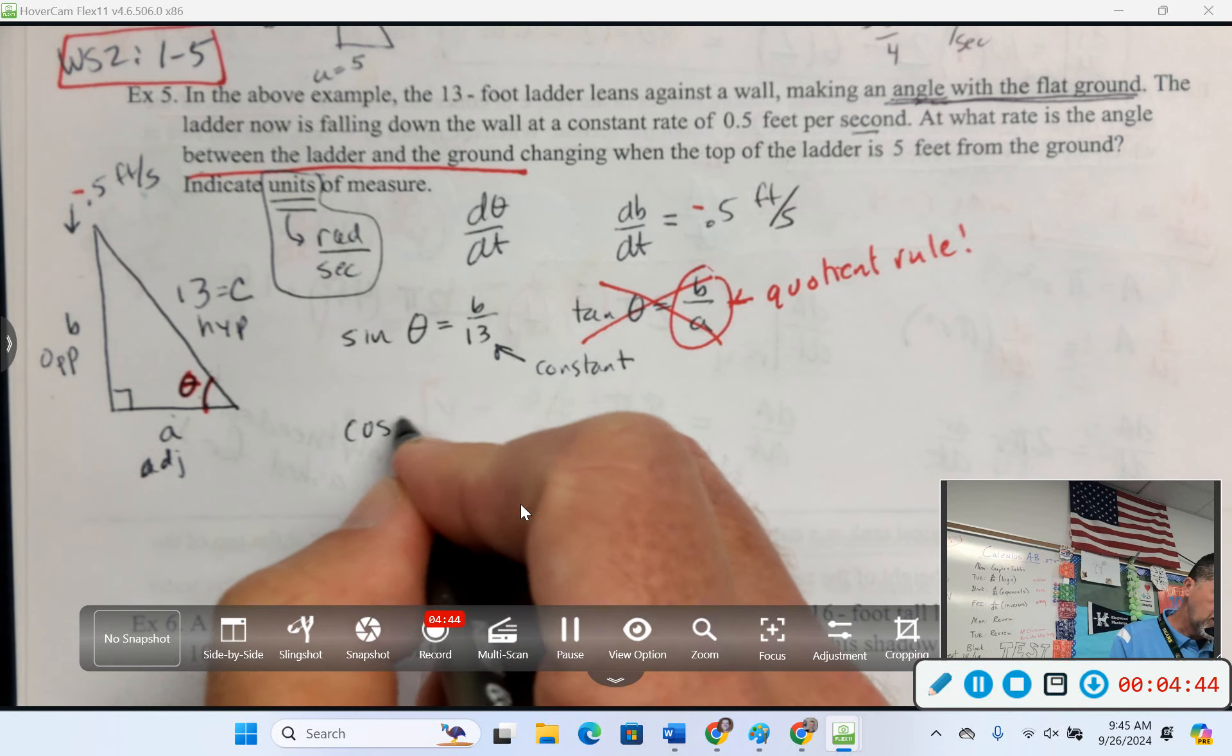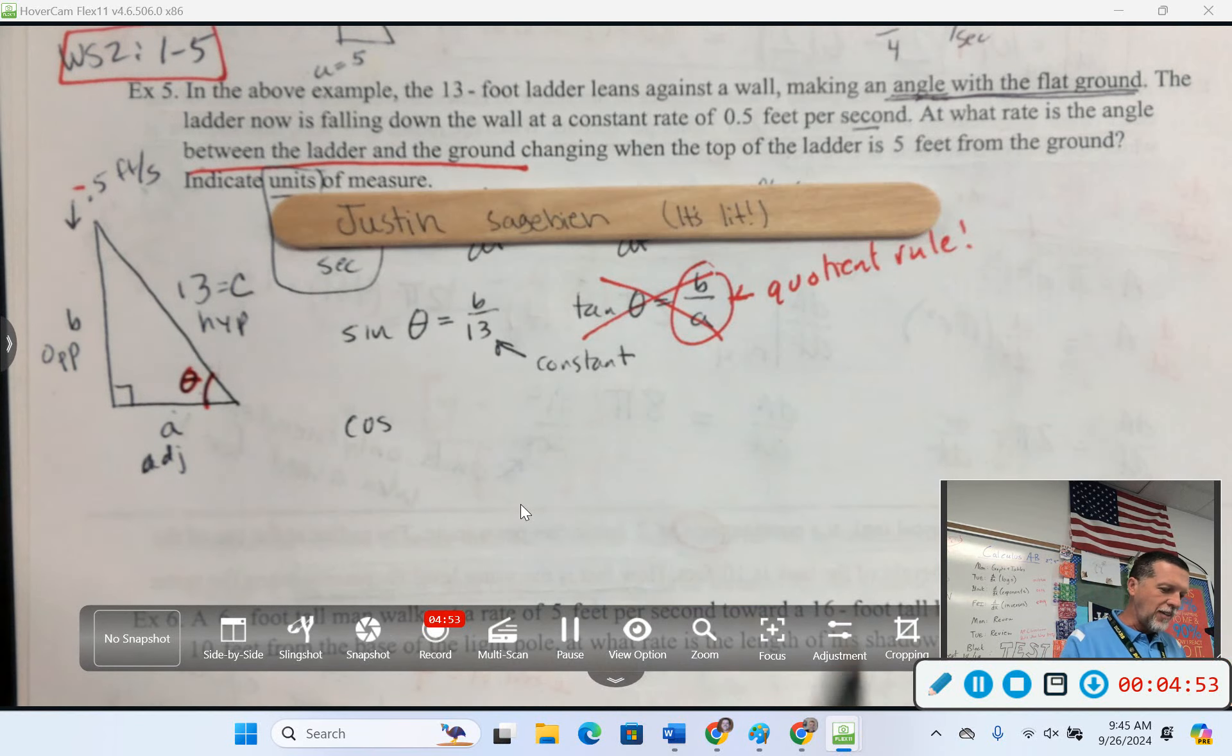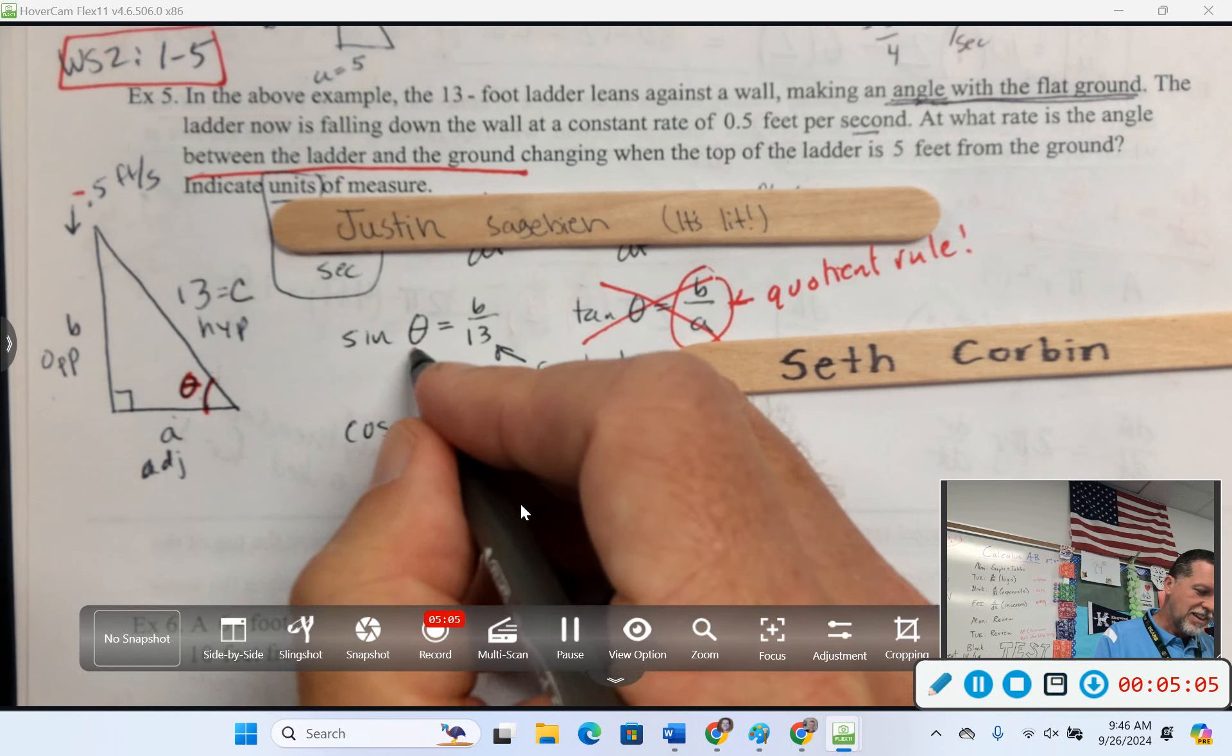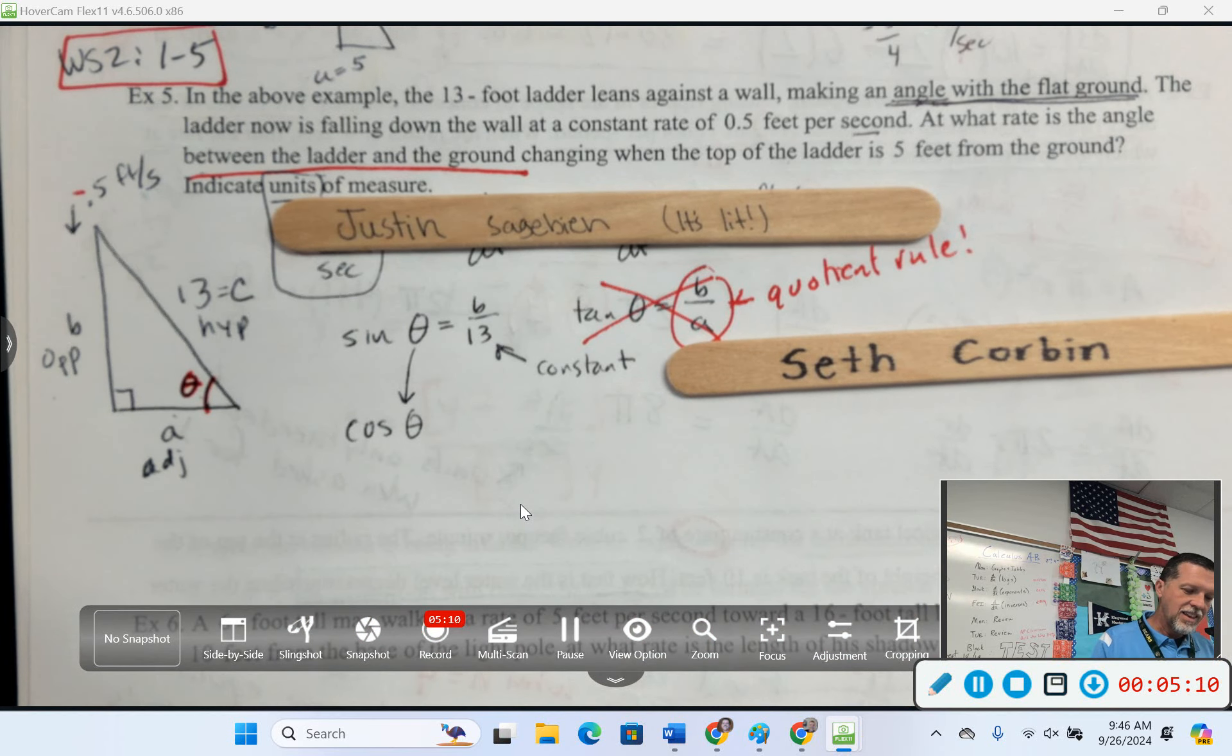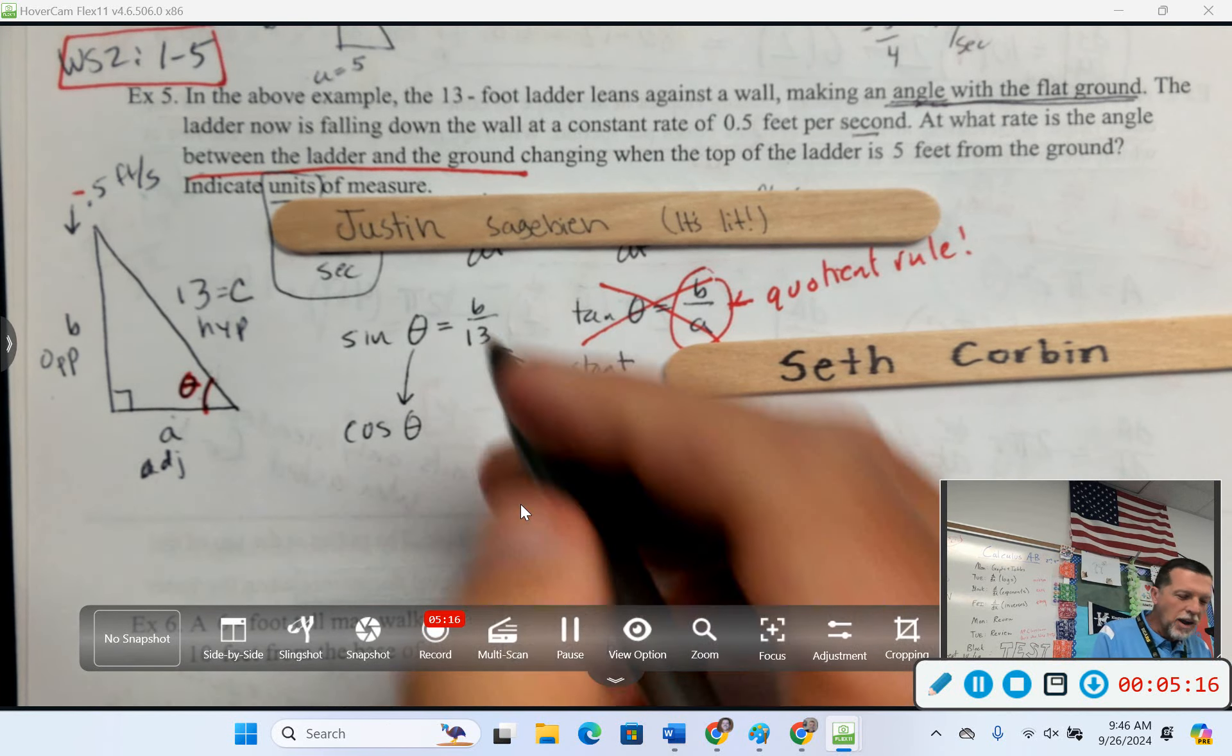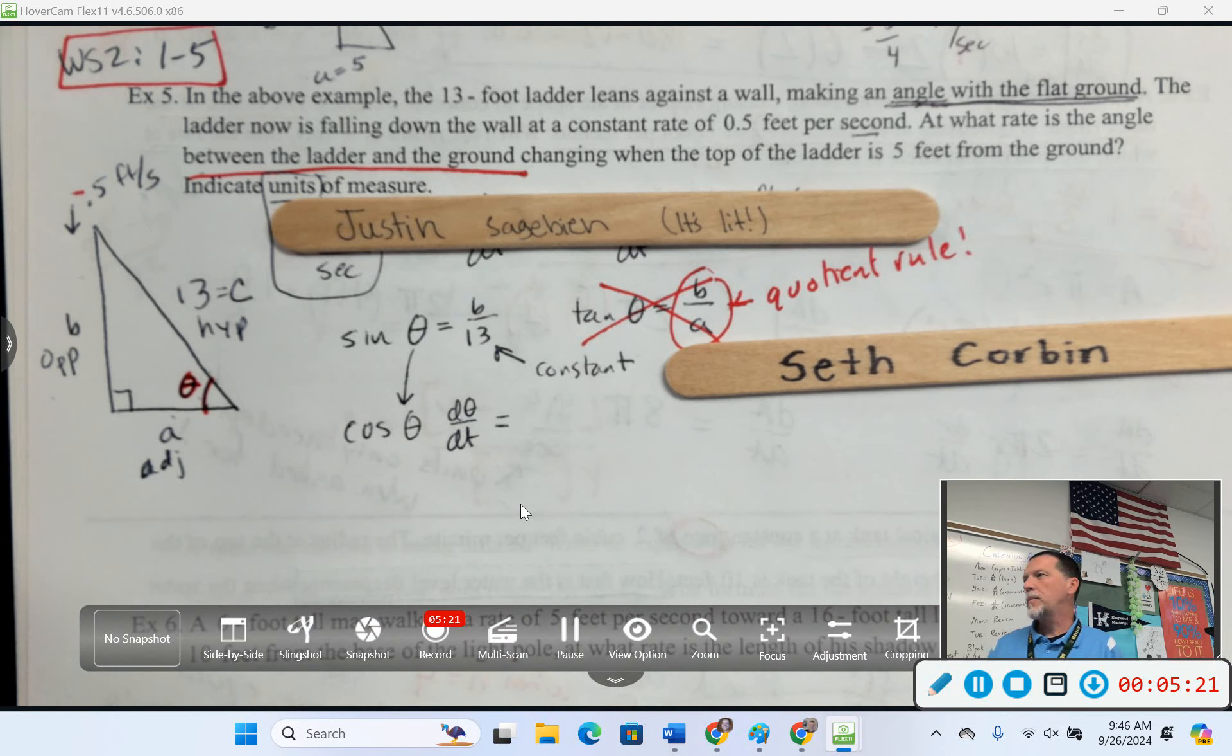Okay, derivative of sine is, let me call on people and see if you'll make the same mistake I did. So, derivative of sine, Justin, I gave you a part of the answer. Cosine theta, and then is it y prime? But that's not y. Theta prime or dθ/dt would probably be a little bit clearer. Thank you.